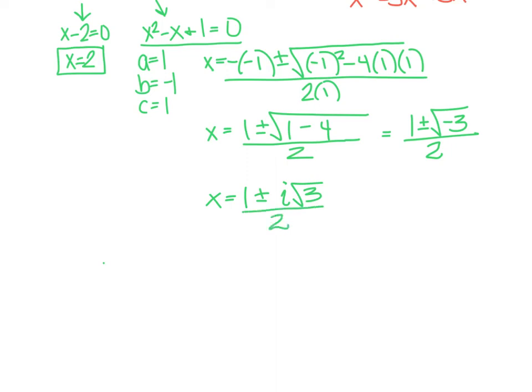And then our last step is to write it in that a plus bi form to go ahead and split up to write it as a complex number. And we do that just by splitting our term into 2. So x equals one half, which is divide each part by 2, plus or minus i root 3 over 2.